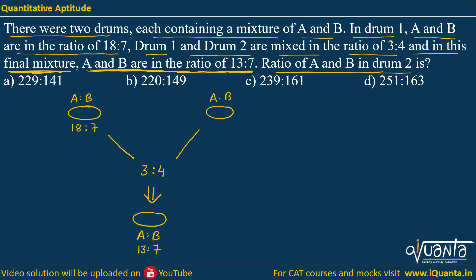In such questions we will always start by assuming some particular volume of each drum. In drum 1, A and B are in ratio 18:7, so we assume a volume that is a multiple of 18+7, which is 25. Since we are mixing drum 1 and drum 2 in ratio 3:4, we take the volume of drum 1 equal to 25×3, which gives 75.